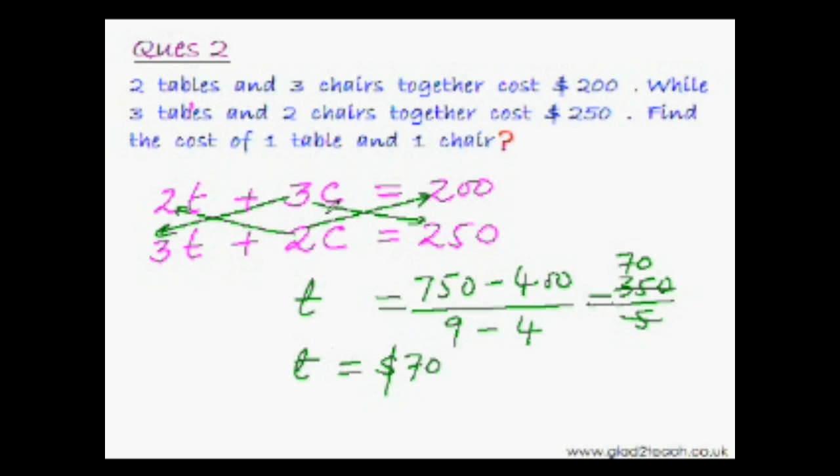Now find the cost of one chair as well. Put this value of t in this equation. 2 times 70 is 140. So 3c equal to 200 minus 140. 200 minus 140 would be 60. And 60 divided by 3 is 20. So cost of chair is 20 dollars. See so easily we have solved the question.